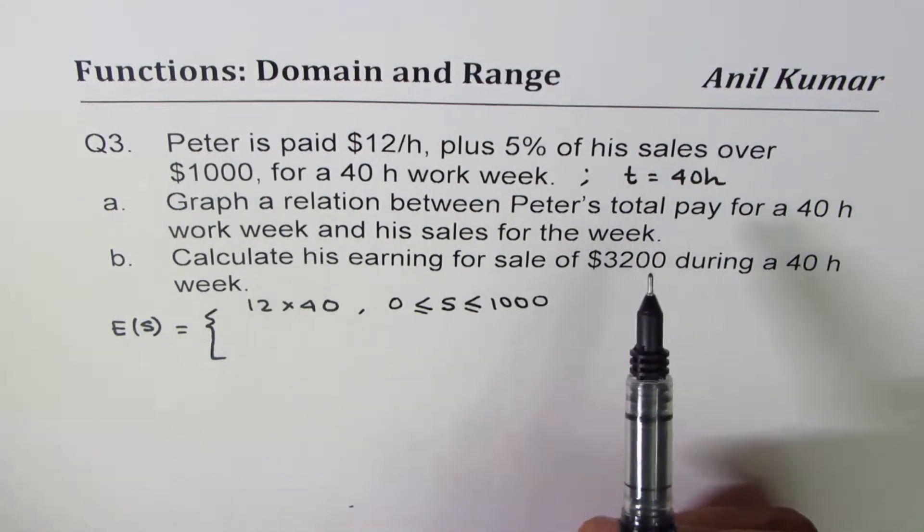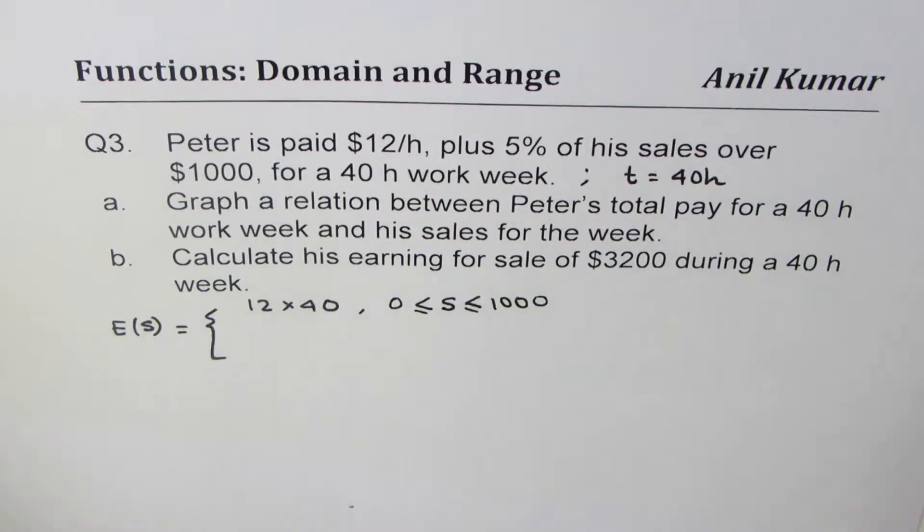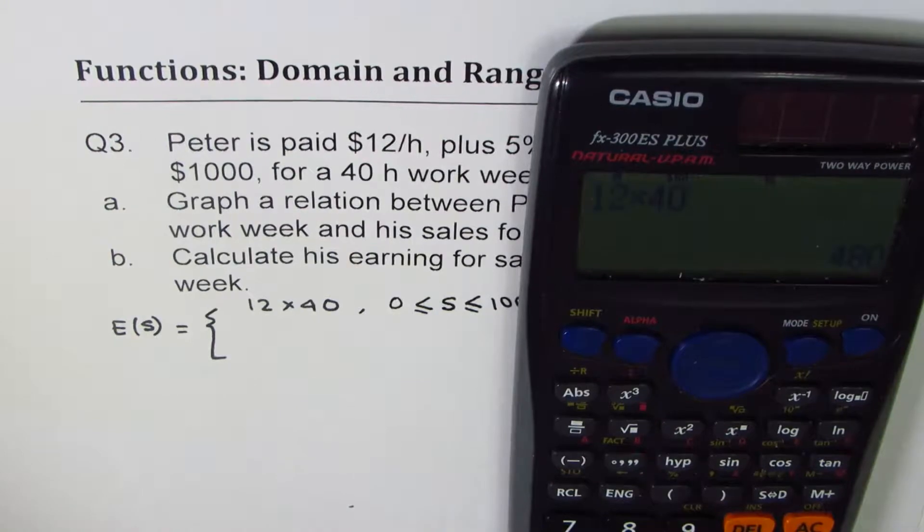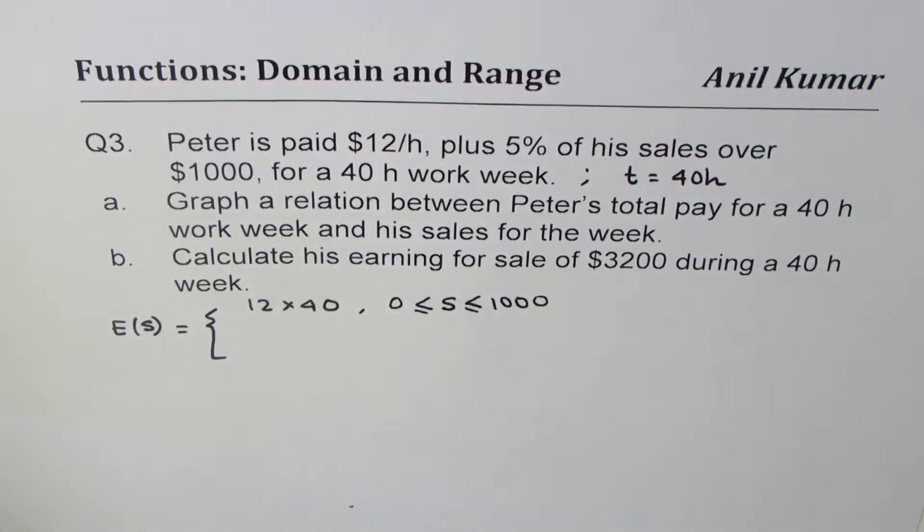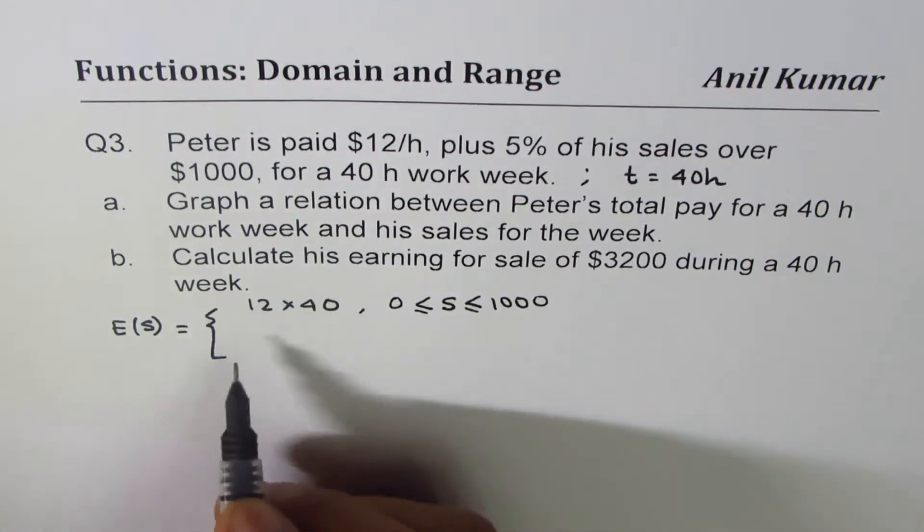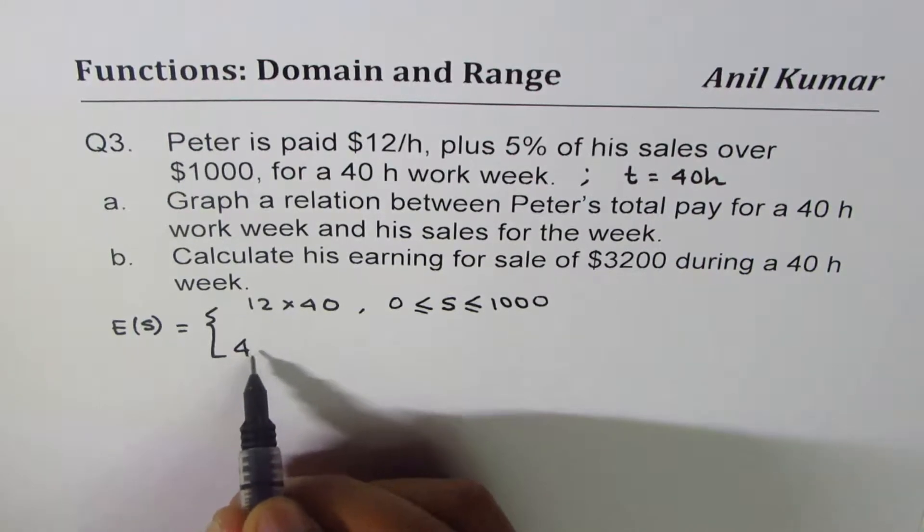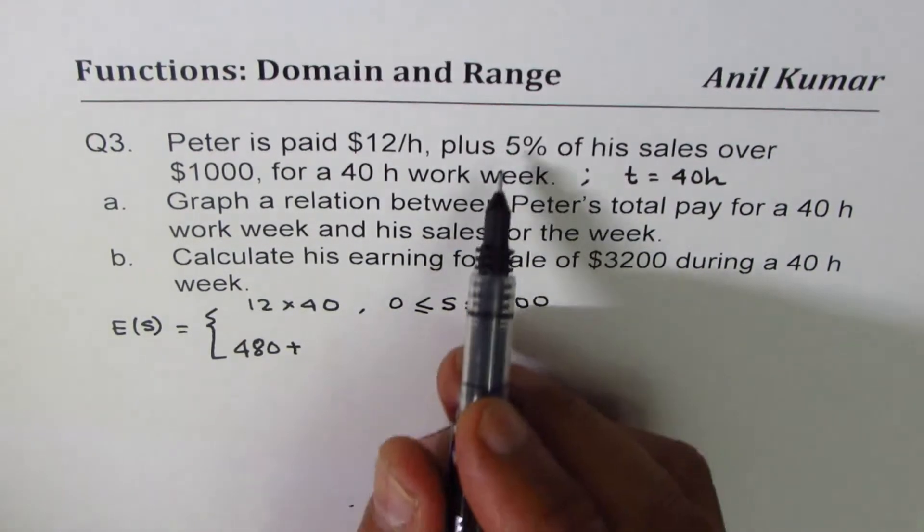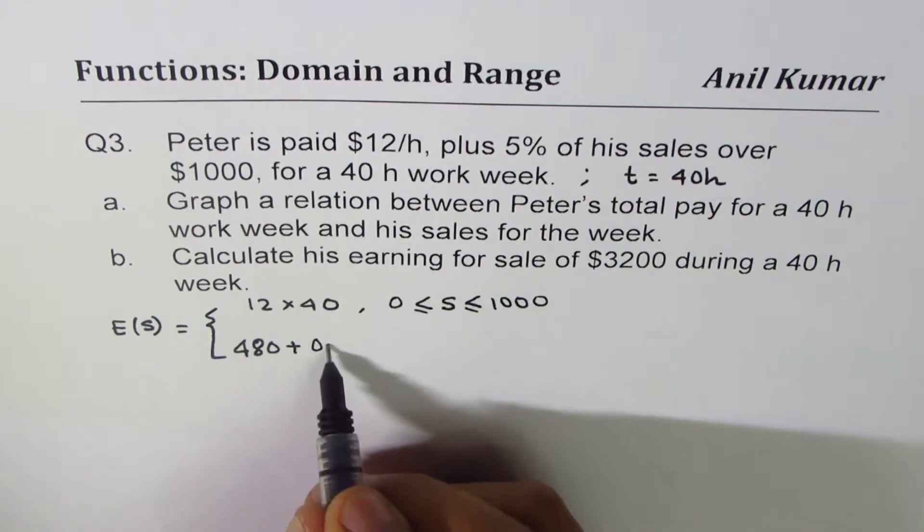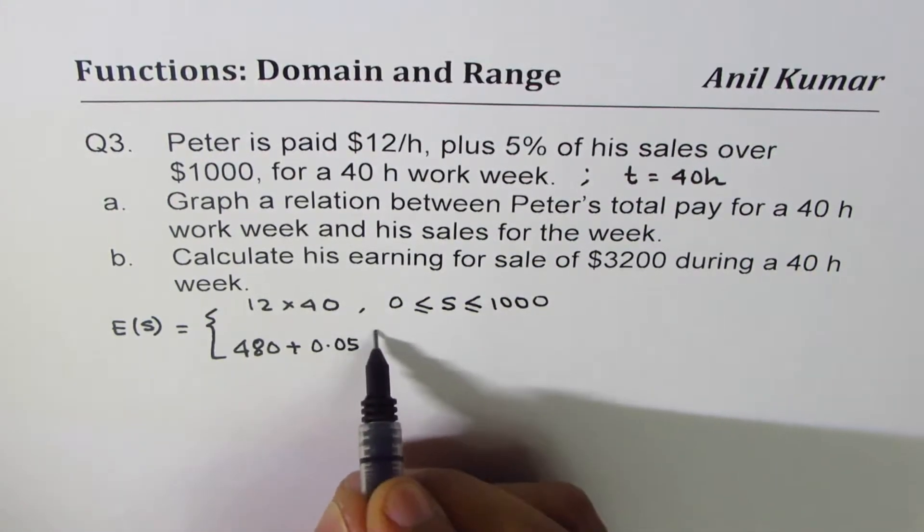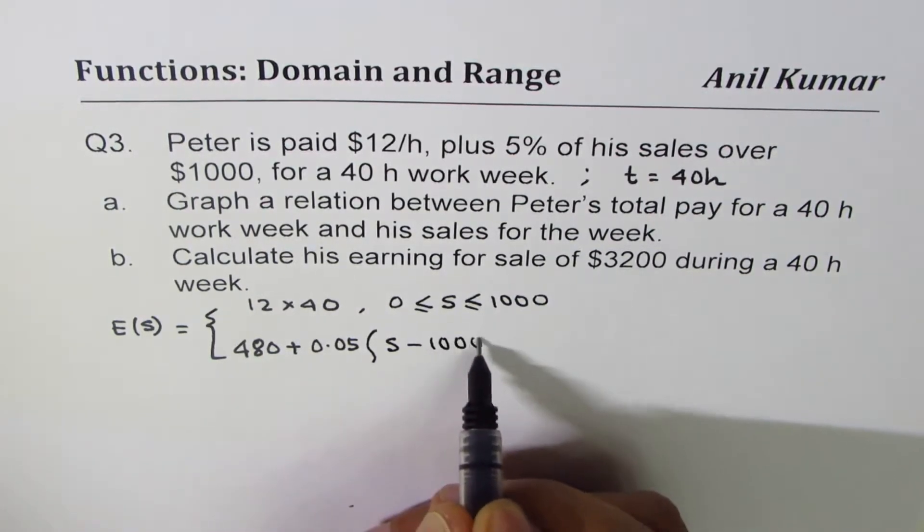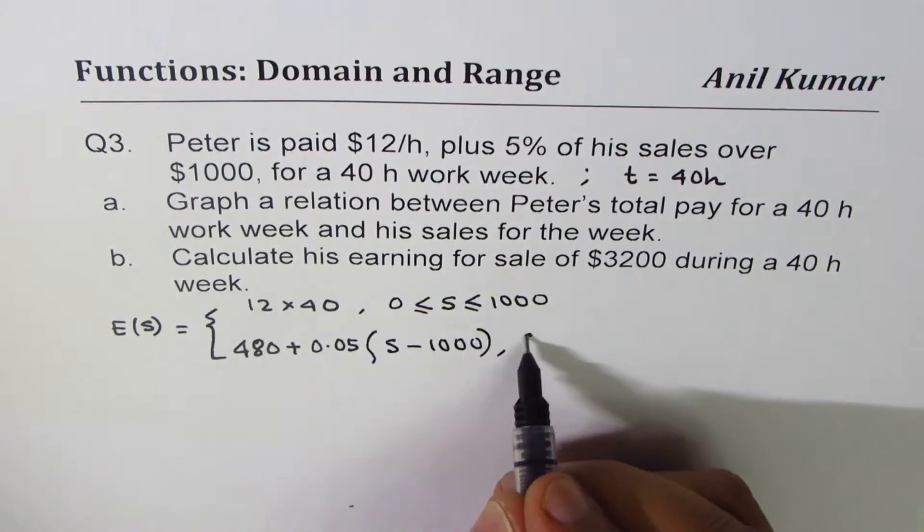So what is 12 times 40? Let's do this: 12 times 40 equals to 480, right? So this is what we get: 480 dollars plus five percent which is 0.05 on sales which is more than thousand.